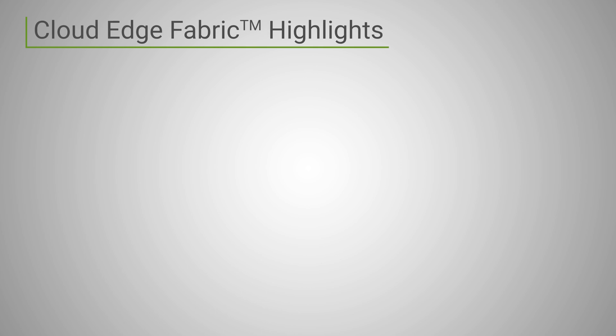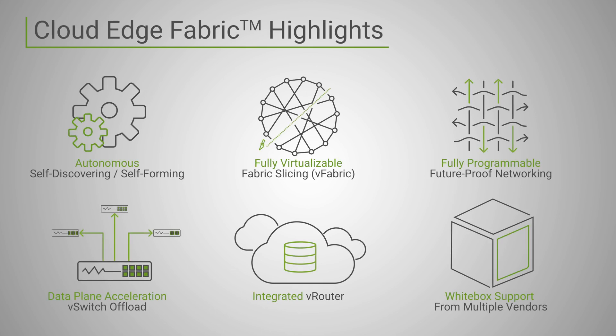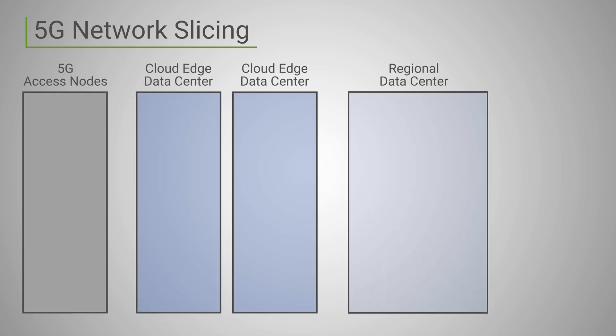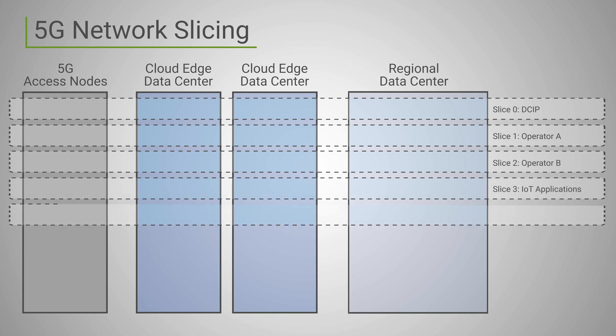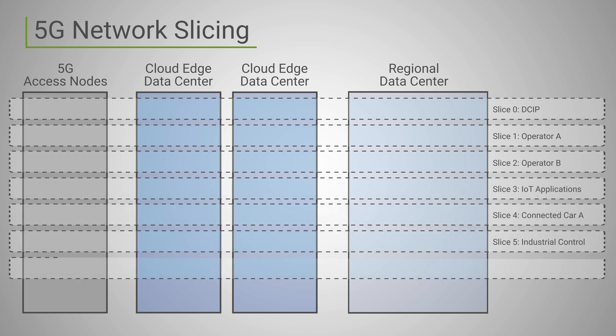The Colum Cloud Edge Fabric natively supports network slicing, whereby an edge data center can be partitioned into multiple independent virtual data centers. Each virtual data center is provided its own virtual fabric called a vFabric, and can be assigned to a different virtual data center operator. Slicing thus permits multiple operators and large enterprises to share a common distributed cloud infrastructure, with each entity enjoying full isolation down to the hardware level for better security and a better quality of experience.